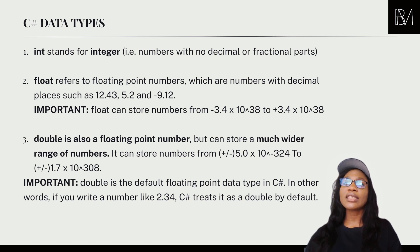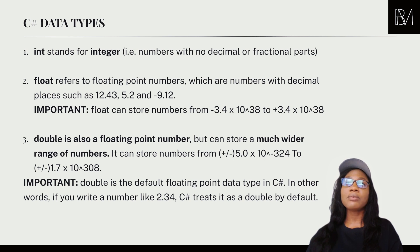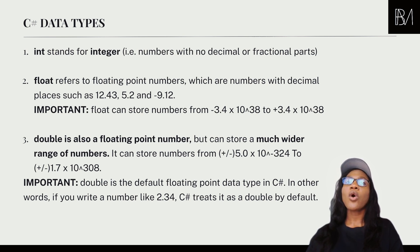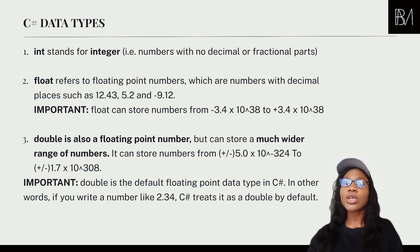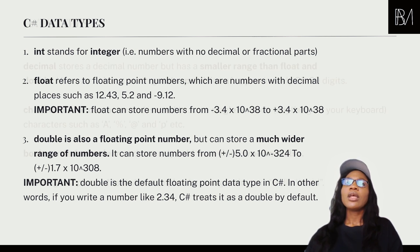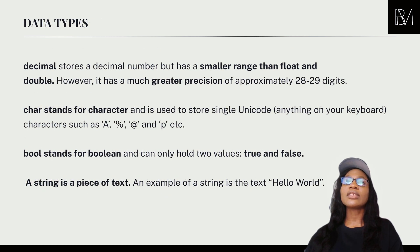The double is the default data type for numbers with remainders in C#. Whenever you write a number with a decimal point without specifying a type, C# assumes you want it to be a double. It treats all floating point numbers as doubles by default — and you can imagine why, because doubles take on a much wider range, making it the safest choice for C# to assume.